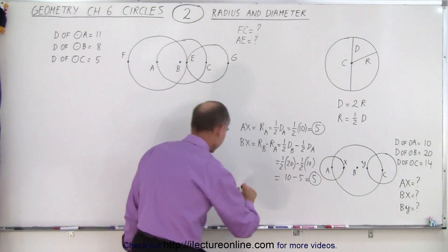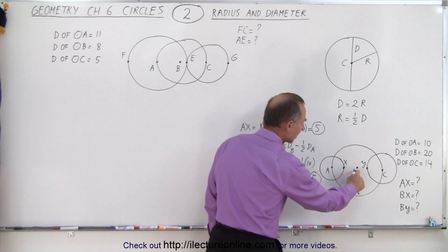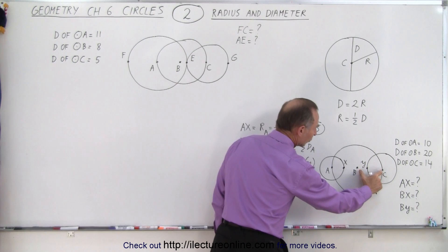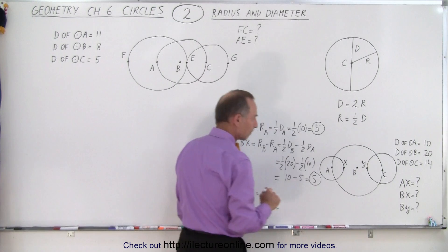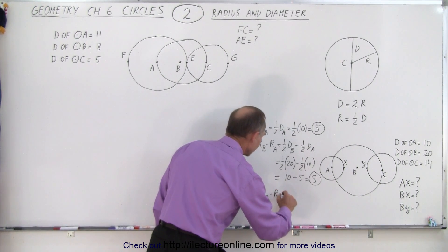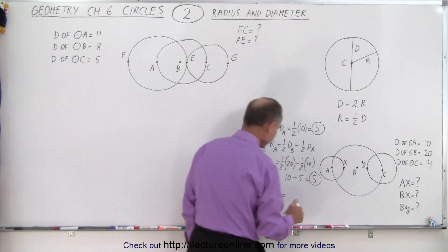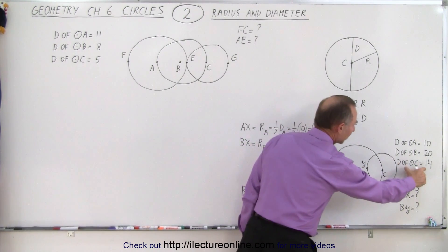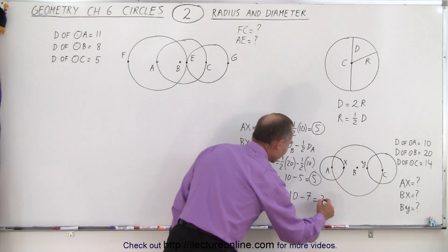Now, how about the distance from B to Y? We take the distance from B to C, which is the radius of B, and subtract from that the distance from C to Y, which is the radius of C. So this equals the radius of B minus the radius of C. The radius of B is one-half of 20, which is 10. The radius of C is one-half of 14, which is 7. So 10 minus 7 equals 3.